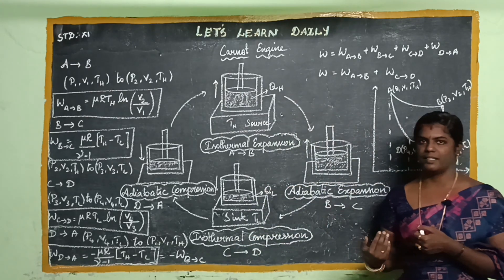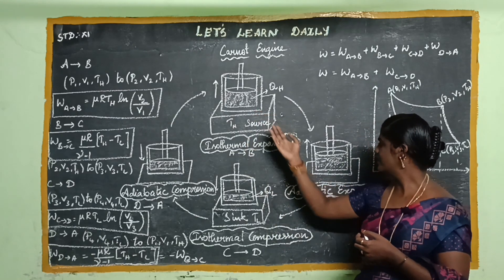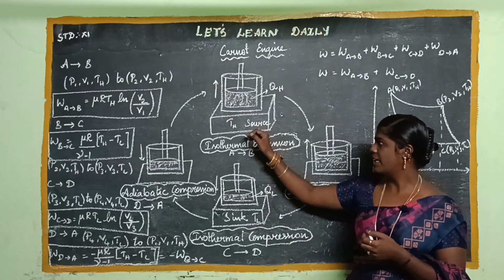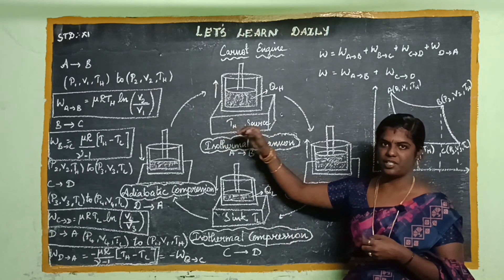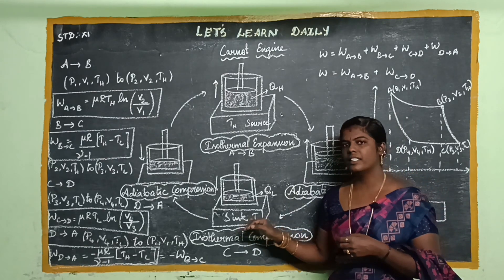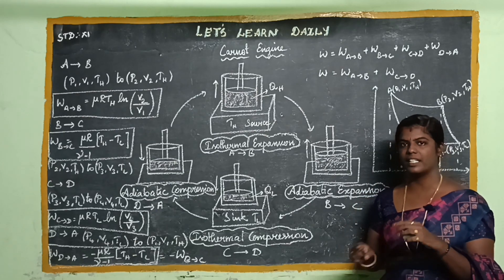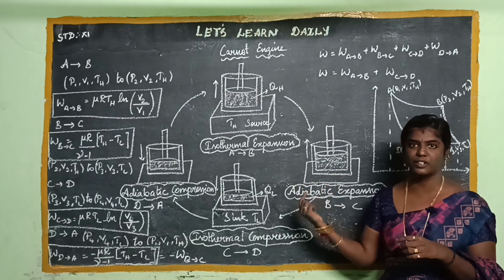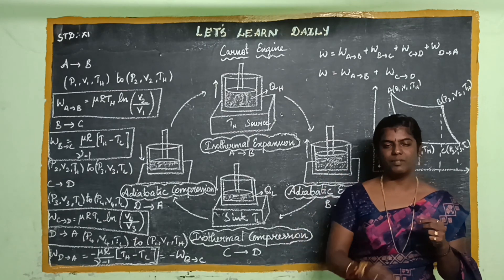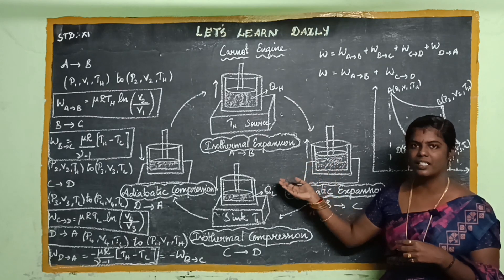What are the parts? Source, Working Substance, Insulating Stand, Sink. The source is at high temperature TH — maximum high temperature. The sink is at low temperature TL. These are the two temperatures: TH and TL. This is a reversible process — the system returns to its initial state.